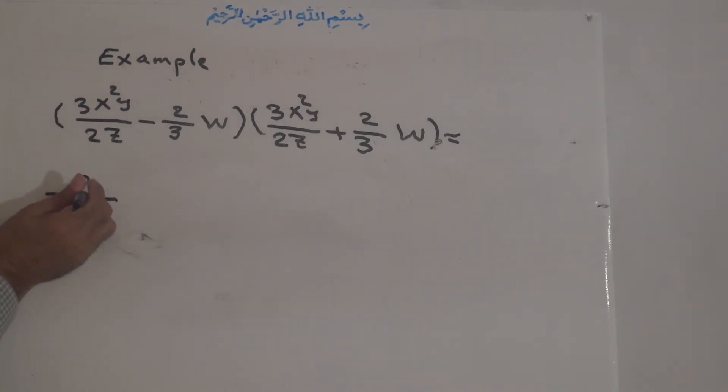Now is equal to the first term to the power of 2. The power of 2 of 3 is 9. 3 times 3 is 9. x to the power of 2 becomes x to the power of 4, and y to the power of 2 over the square of 2 is 4.